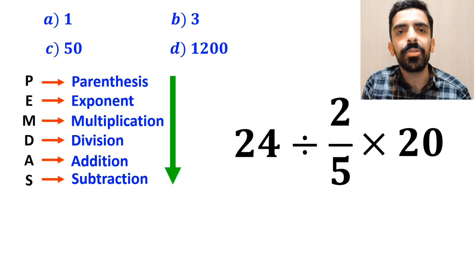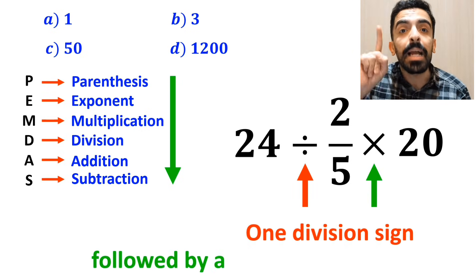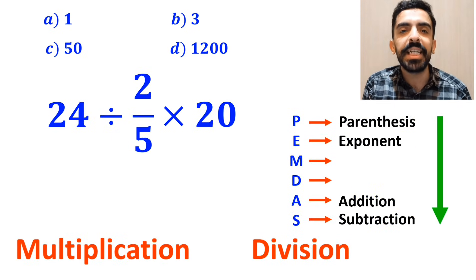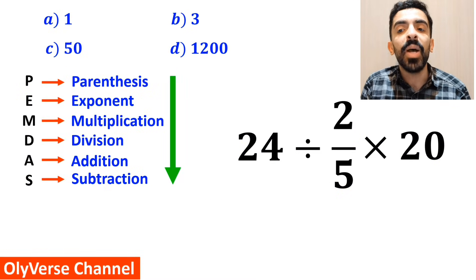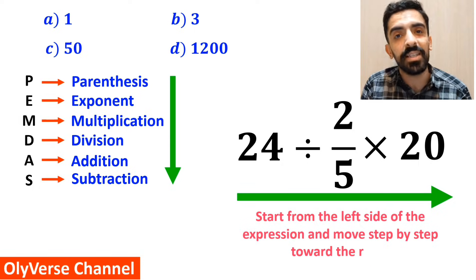Alright, as you can see on the screen, in this expression, we have one division sign followed by a multiplication sign. It's very important to note that multiplication and division are at the same level of precedence. In this case, the best thing to do is to start from the left side of the expression and move step by step toward the right.